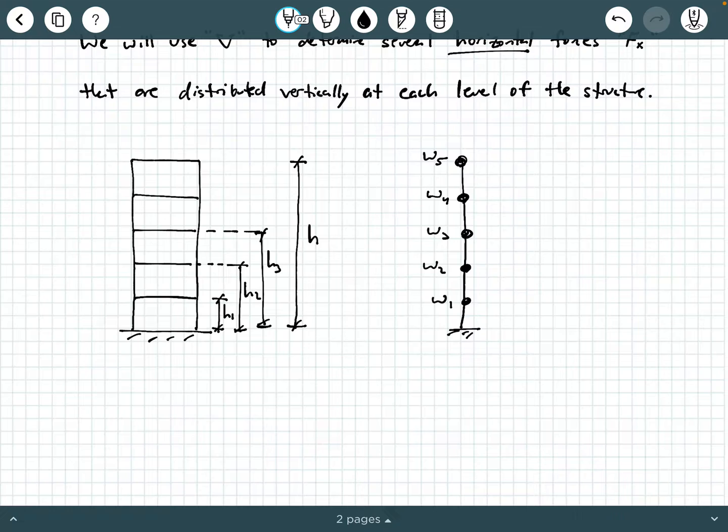Now what we do is we follow either method one or method two to get C sub S, and what we can then calculate is this base shear force. Now what we're going to end up doing is we're going to use this base shear force V to determine the forces at each level along and up this building, and they're horizontal forces. So what we're effectively finding is F1, F2, F3, F4, and F5. And just note, it doesn't have to be five of them. It could be two stories, one story, 20 stories, whatever. So this is what we're interested in finding. These horizontal forces that are vertically distributed. That's why we call it vertical distribution of seismic forces.